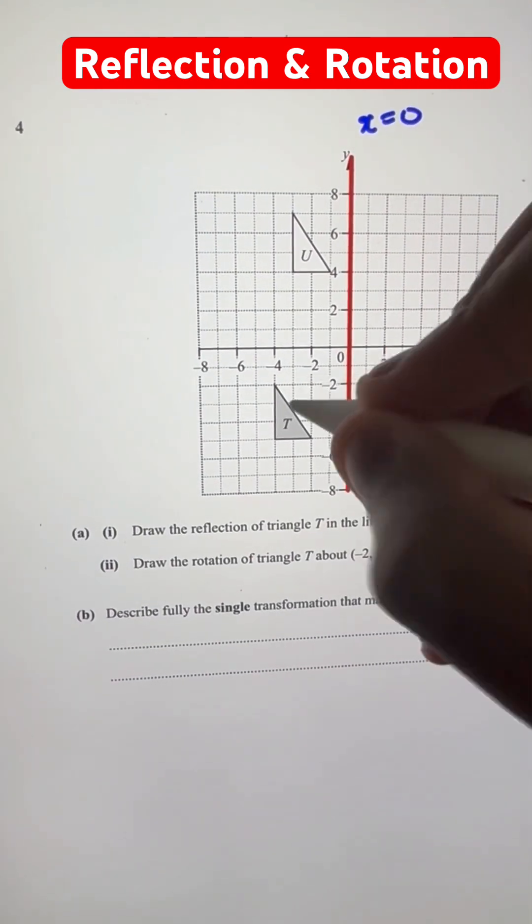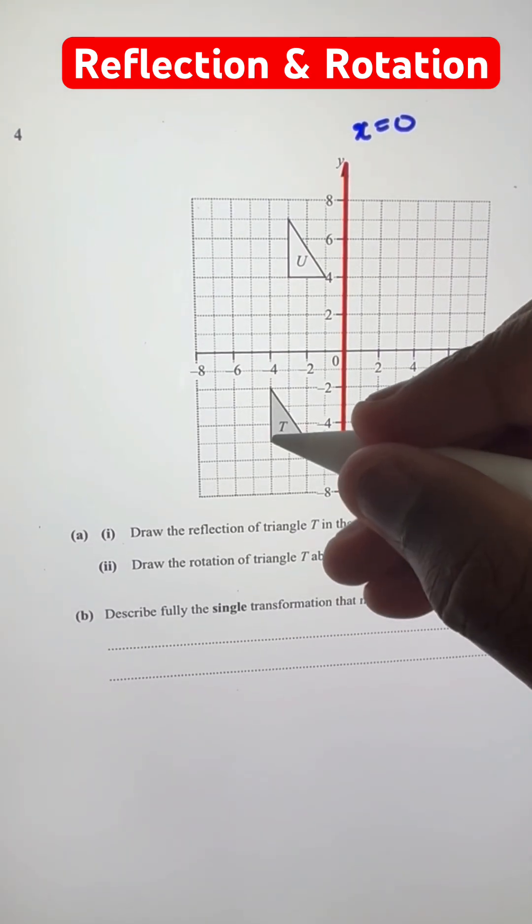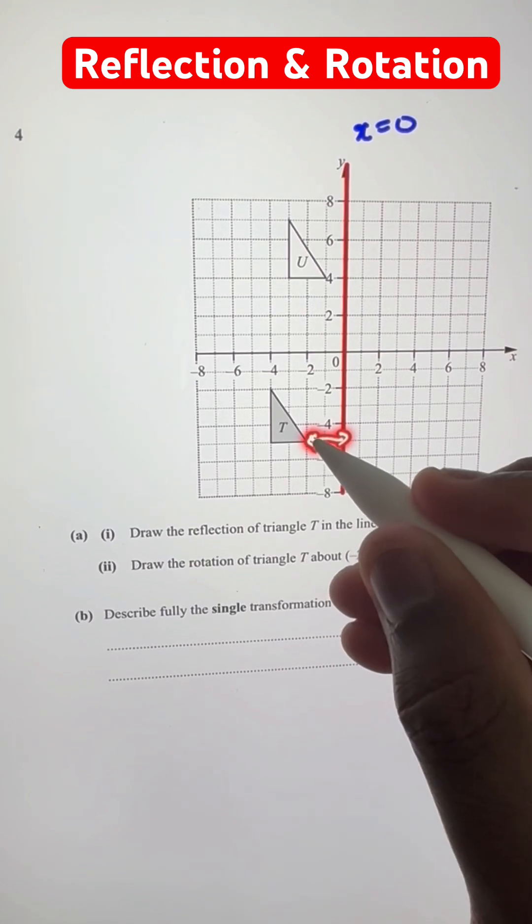And we need to reflect this triangle across this line. So let's reflect each of the three points separately and then join them together. This one is two units away from the line, perpendicularly,